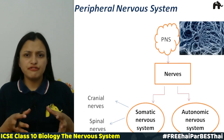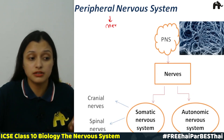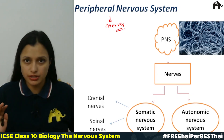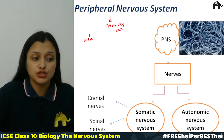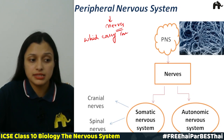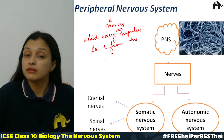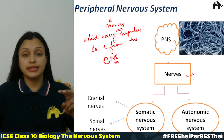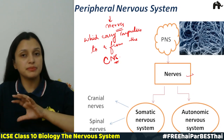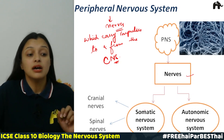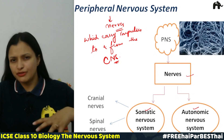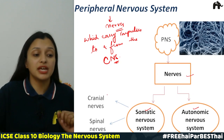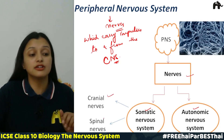The peripheral nervous system contains all the nerves which carry impulses to and from the central nervous system. It is divided into two subdivisions: the somatic nervous system and the autonomic nervous system. The somatic nervous system has two types of nerves: cranial nerves and spinal nerves.